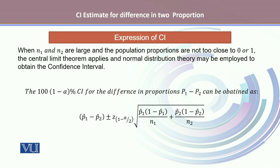Like other confidence interval estimates, here we'll use the same expression where we will use the estimate for the difference between two proportions, plus minus the reliability factor and the standard error of estimate for the difference between two population proportions. When N₁ is a sample size for the first population and N₂ is a sample size for the second population are large and the population proportions are not too close to zero or one.